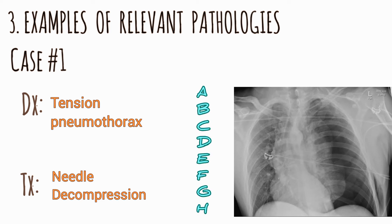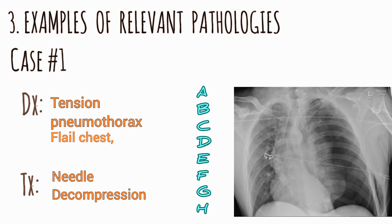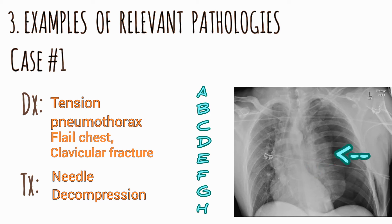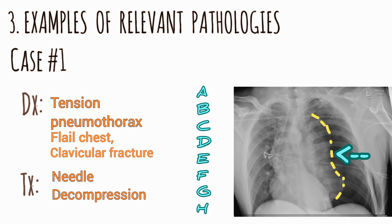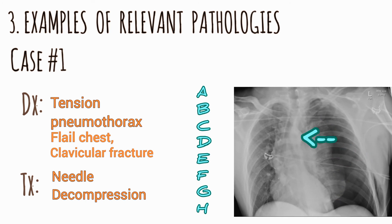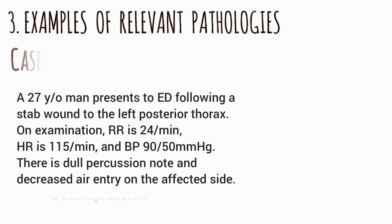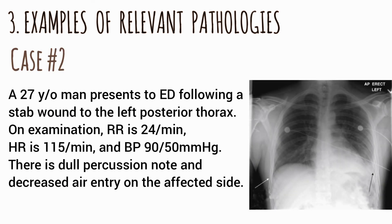On the radiograph: the trachea is shifted to the right; there are fractures of the 3rd, 4th, and 5th ribs posteriorly and a fracture of the middle third of the left clavicle; the heart is shifted to the right; the diaphragm looks normal; no effusion is seen; the left lung looks collapsed; the aorta is also shifted to the right; the gastric bubble is not visible; and the hila cannot be located.